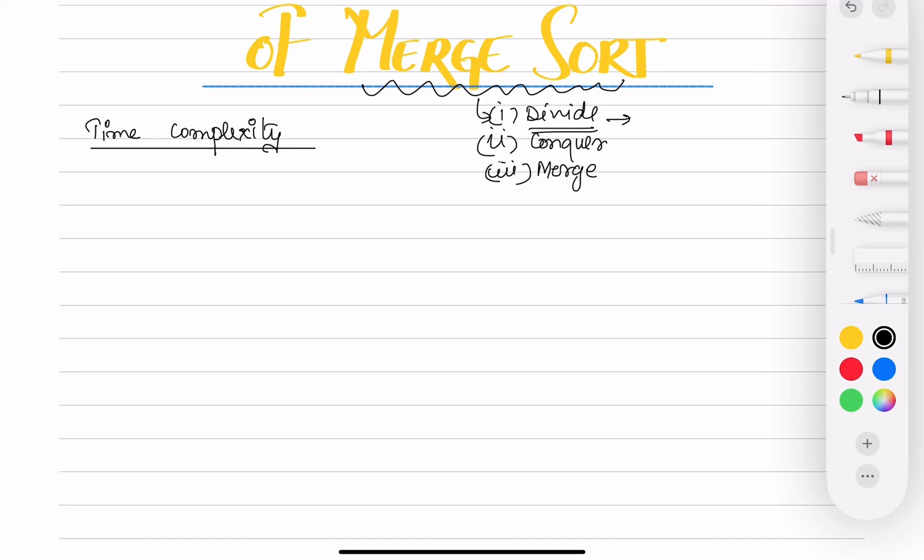When we divide, we divide it into equal size. So we write T(n), which is the time complexity, as 2T(n/2) + n. Now how we got this expression, let me tell you.